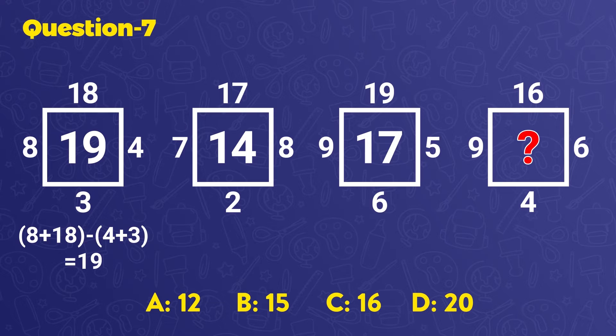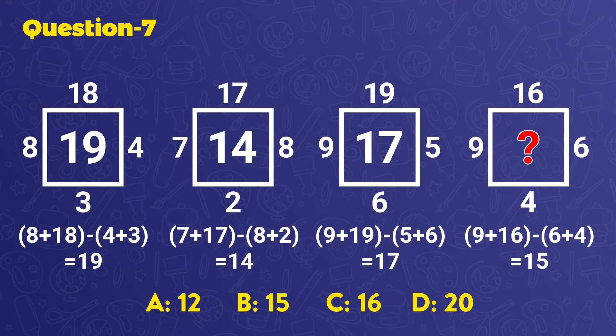In the end, we get 19. You implement this same operation to solve the number for our other squares. Therefore, the question mark needs to be 15 by using the operation 9 plus 16 minus 6 plus 4. The right answer is B.